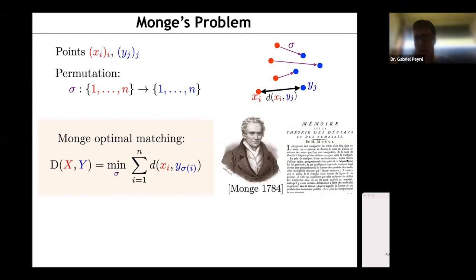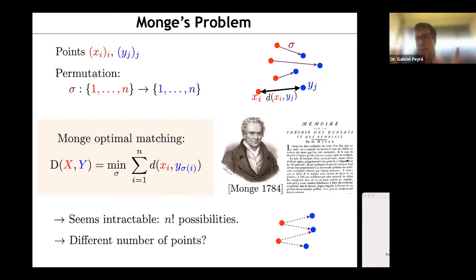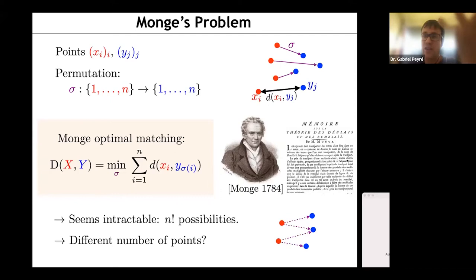The problem makes sense — many problems can be phrased as measuring the cost induced by traveling between two sets of points. But it's intractable: too many permutations. And practically, what do you do if you don't have the same number of points, or if one dataset is finite and your model is continuous? This is what the modern formulation addresses. The first revolution in the history of optimal transport is due to Leonid Kantorovich, who worked on transshipment problems during the Second World War — also for military purposes — and then got interested in economic modeling.